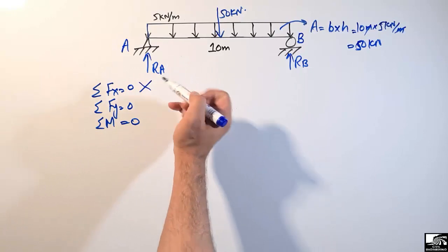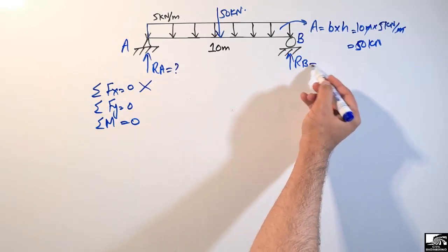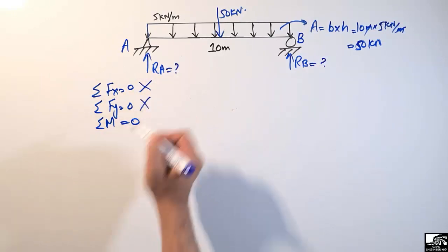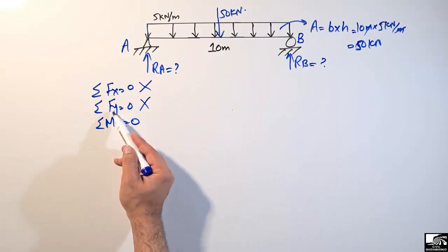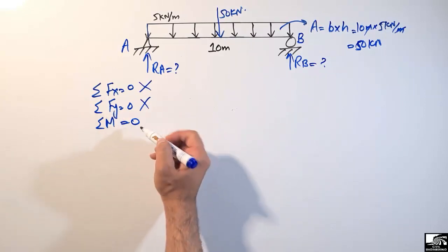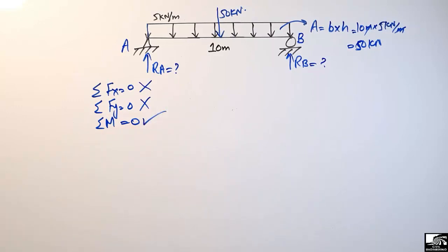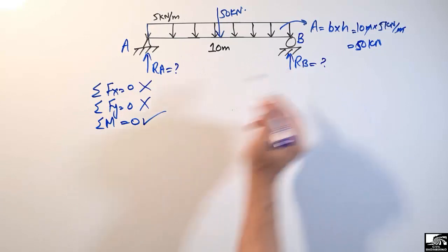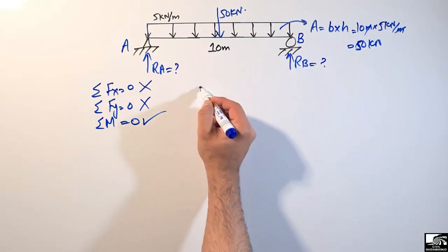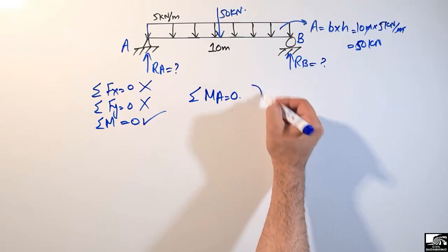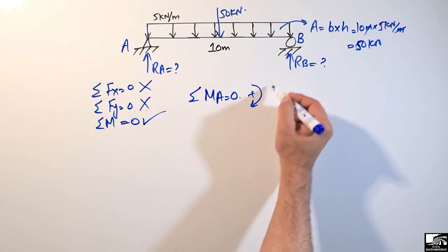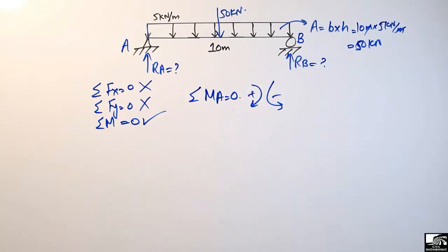We have two unknowns, RA and RB, so we cannot use the summation of Fy equation directly since it would contain two unknowns. Instead, we take the summation of moments at point A equal to zero, where clockwise moments are taken as positive and counterclockwise moments are taken as negative.